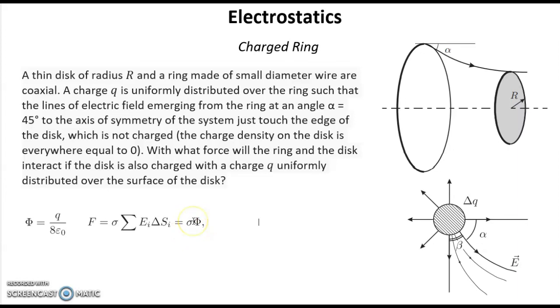And this is the final formula for this force: that will be sigma, which is surface density of our charge, multiplied by total flux. But total flux we already counted, it's this one. So finally we have this answer: force equal to sigma multiplied by q over 8 epsilon 0, and the sigma equals q over pi R squared.